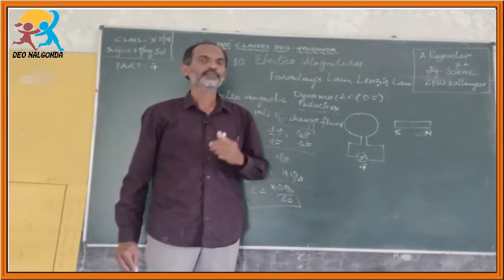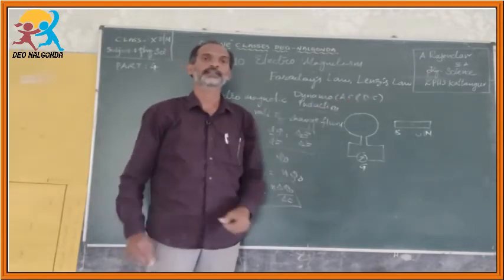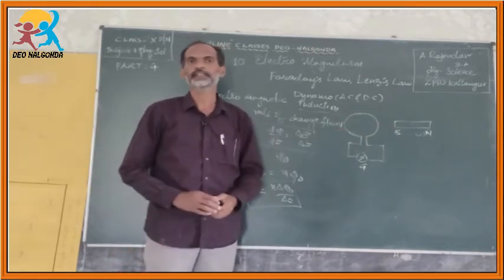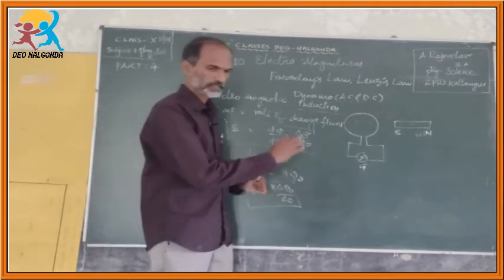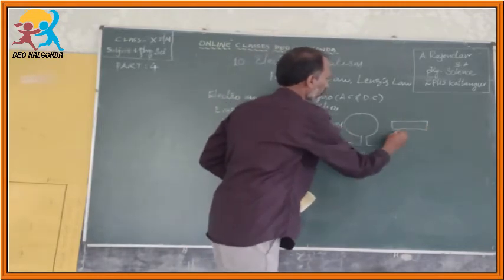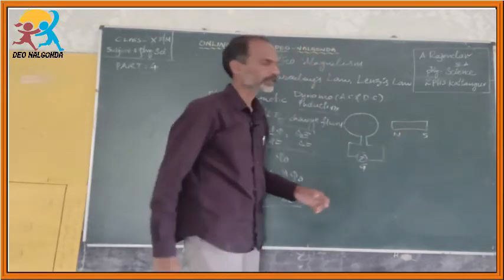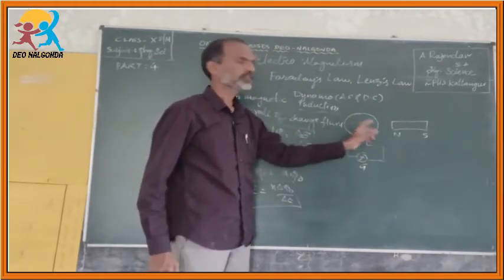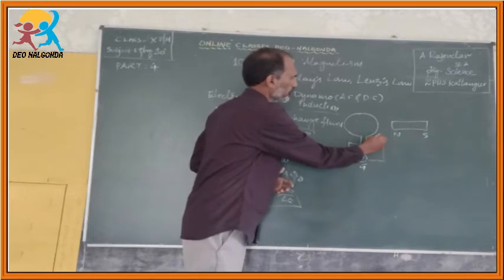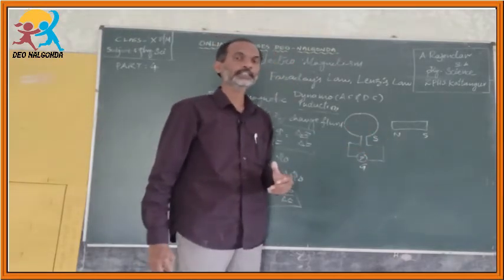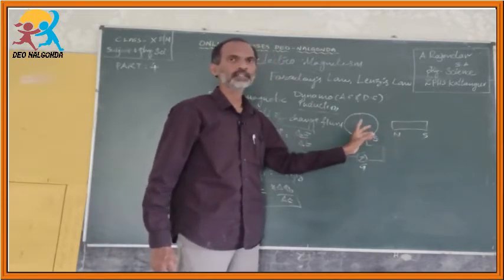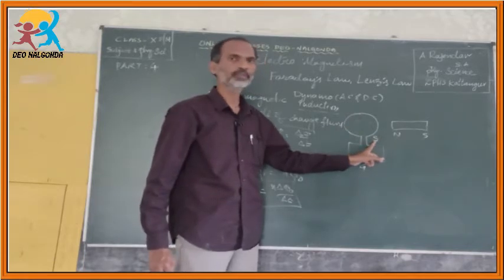Later on, a Russian physicist, Lenz, tried to explain the direction of the electric current produced by the change in the magnetic field. To understand this, let us consider the same bar magnet and coil with north pole and south pole. As the north pole of the bar magnet is brought near to this electric coil, if the south pole is produced here, it means the electric current is produced in the clockwise direction. Due to this north pole, if electric current is produced in the clockwise direction, a south pole will be produced.